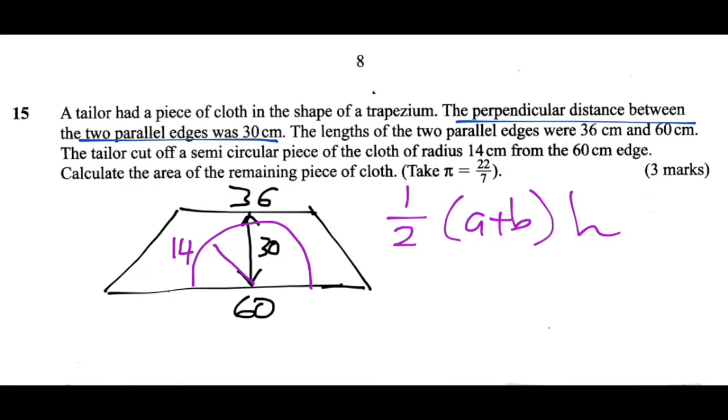We know that our h is the perpendicular height 30 and our a and b are 36 and 60. So we just need to plug these into this formula here. So we have a half multiplied by 36 plus 60 and then that's all times by 30.